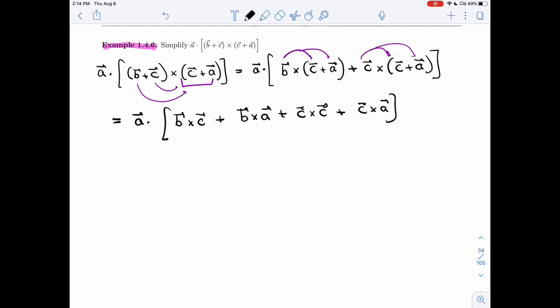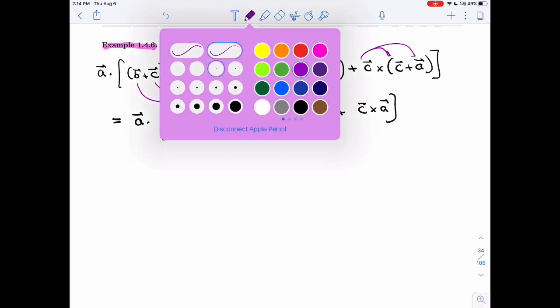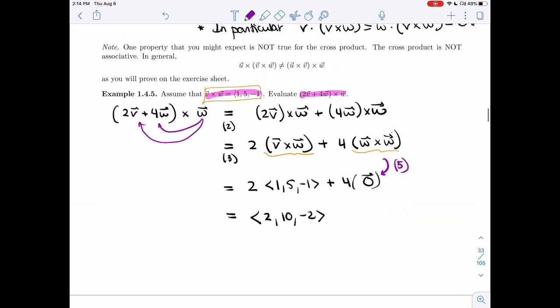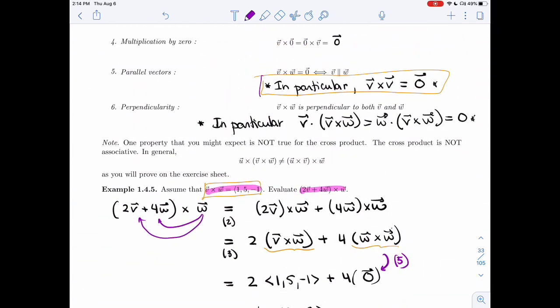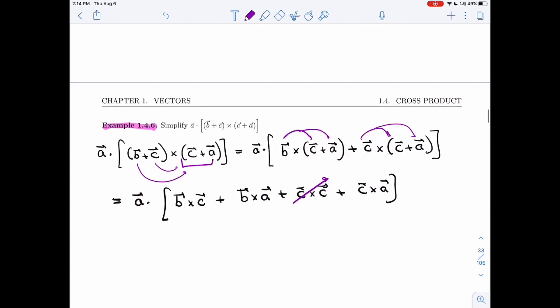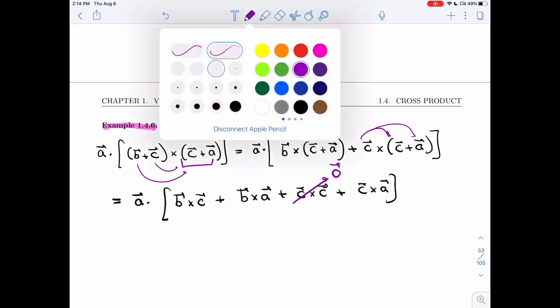All right. So first things first. First, this C cross C we've seen is zero right in this orange box that I'm going to turn into a pink box. So C cross C is the zero vector. So this part will disappear.